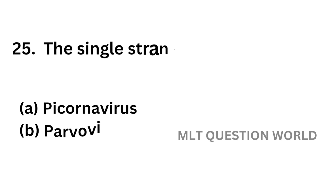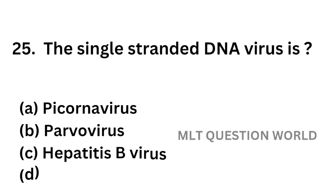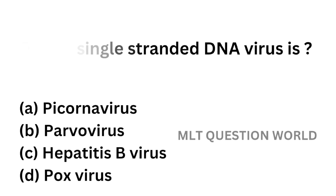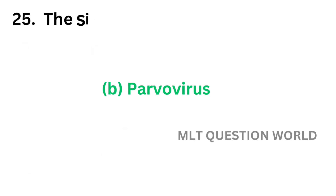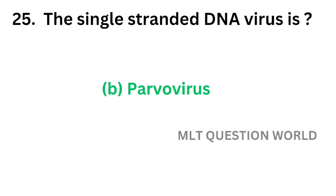Question number 25. The single-stranded DNA virus is: option A, Picornavirus; option B, Parvovirus; option C, Hepatitis B virus; option D, Poxvirus. The correct answer is option B, Parvovirus. Parvovirus is the single-stranded DNA virus and it is the smallest virus.